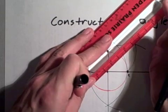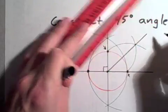You've successfully bisected 90 degrees to make 45.